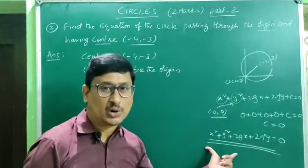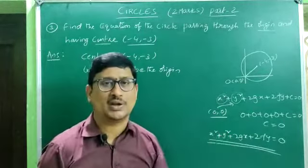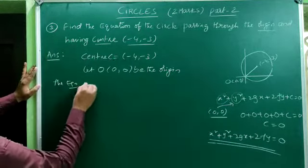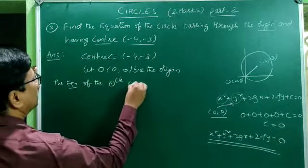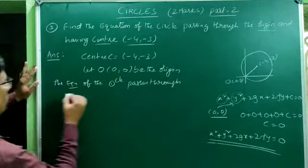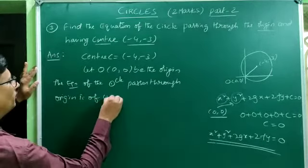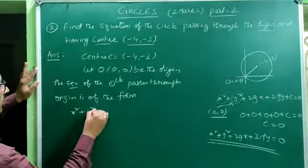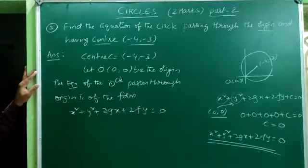The equation of the circle passing through the origin is of the form x² + y² + 2gx + 2fy = 0. There is no constant term.